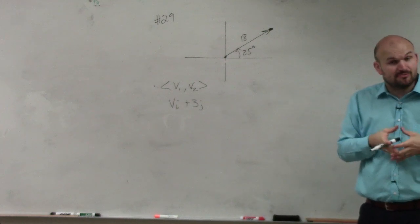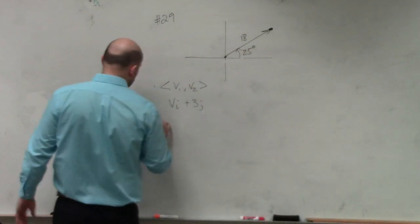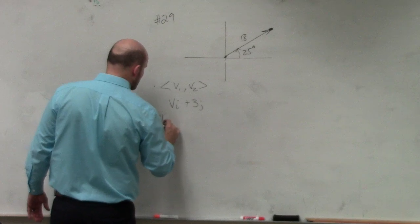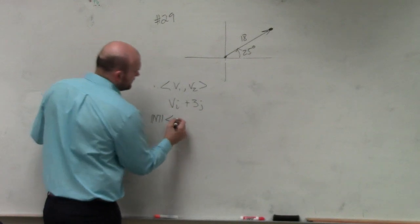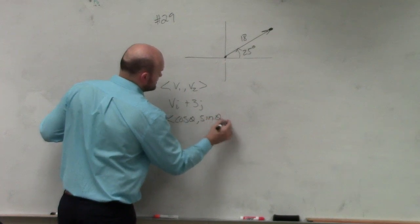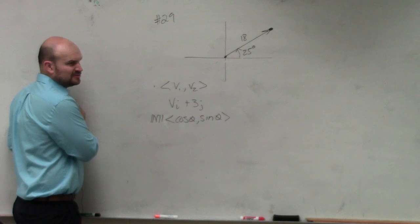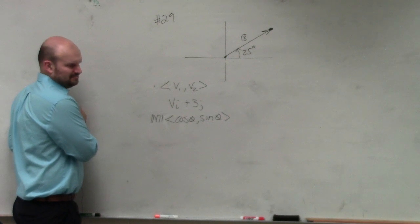So the third portion that we learned was you could use it by multiplying by its magnitude times the general form of a unit vector, cosine theta, sine theta. Well, v represents magnitude. Do we know the magnitude of our vector? Yes.